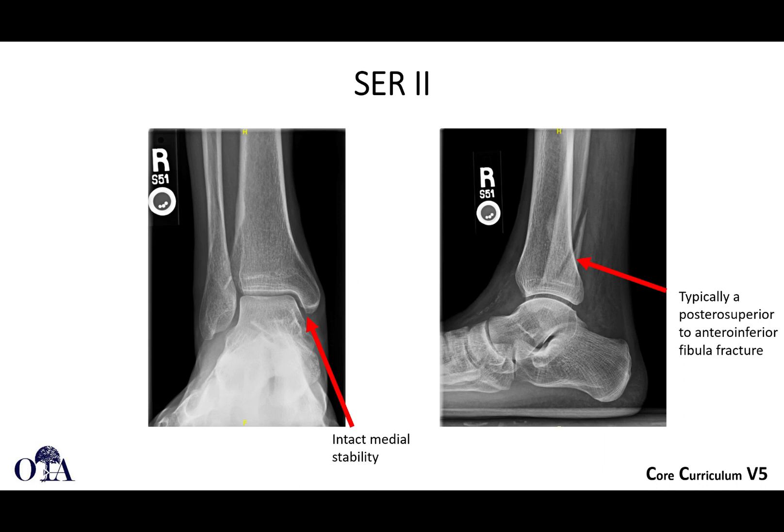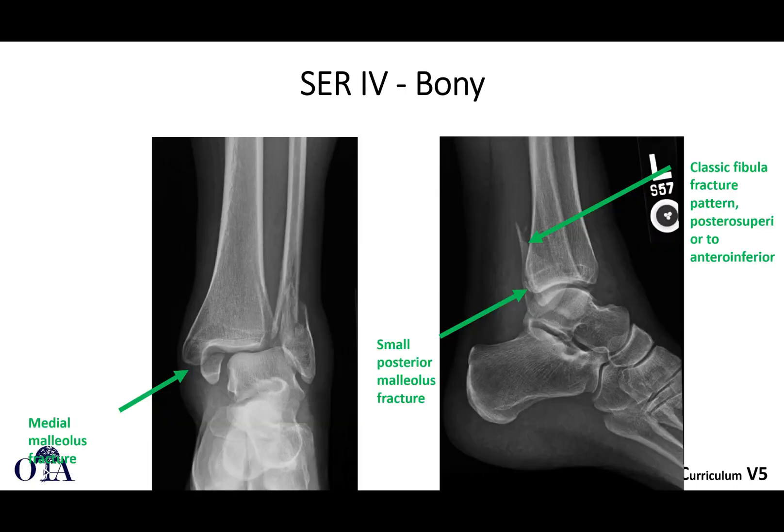For SER 2, there's that classic fracture pattern seen on the lateral view, and you can see how on the AP it's sometimes hard to see — certainly when showing X-rays to a patient, they may not really see it at all. Here you can see it's an SER 2: on static films there's no obvious medial injury, no medial malleolus fracture, no obvious ligament injury on the medial side.